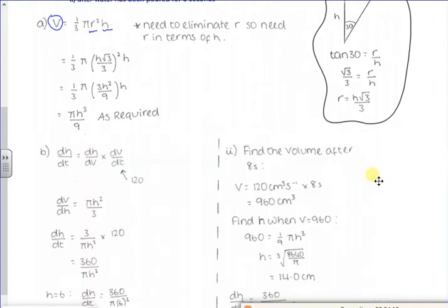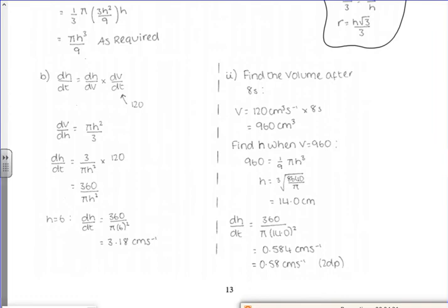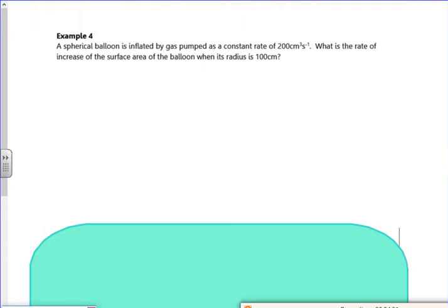So look at this bit for you copying down. There we go. So they're a bit full on but they're really nice questions. Very very chunky questions. You'll be glad to know there's another example for this lesson. It's properly full on. Right. Let's go with example four. So it says a spherical balloon is inflated. So a spherical balloon is inflated.